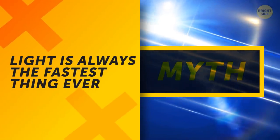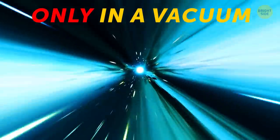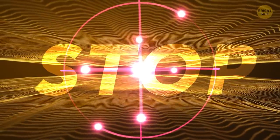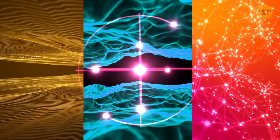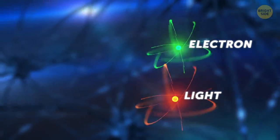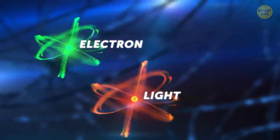Light is always the fastest thing ever. Eh, kinda. But only in a vacuum. Today we know several ways to slow down photons. It will move slower through different substances. Electrons, on the other hand, will move at the same speed in these substances, and sometimes they will be even faster than light.